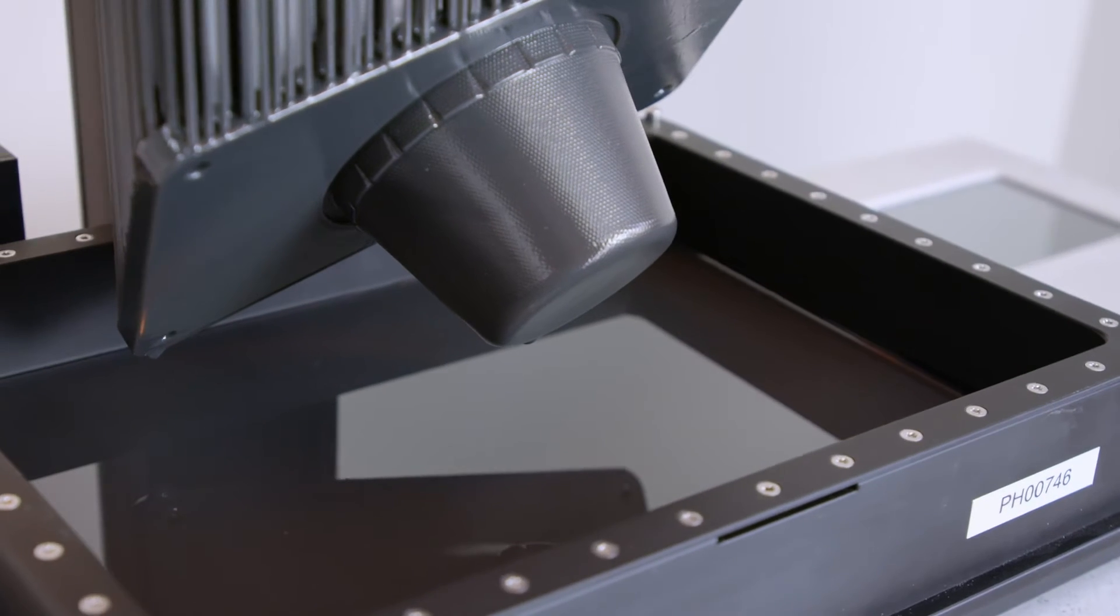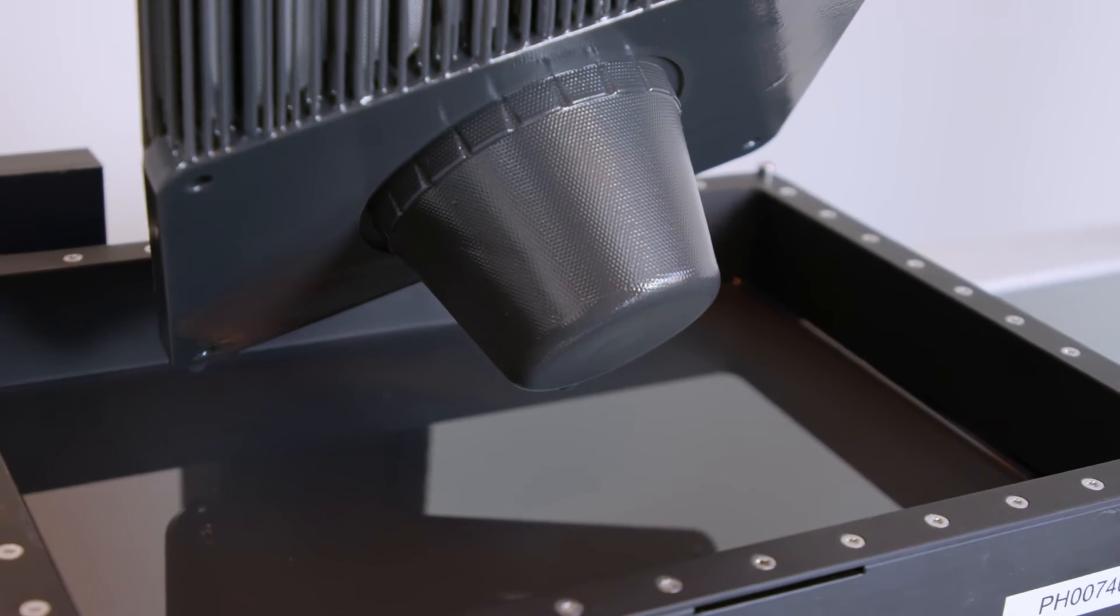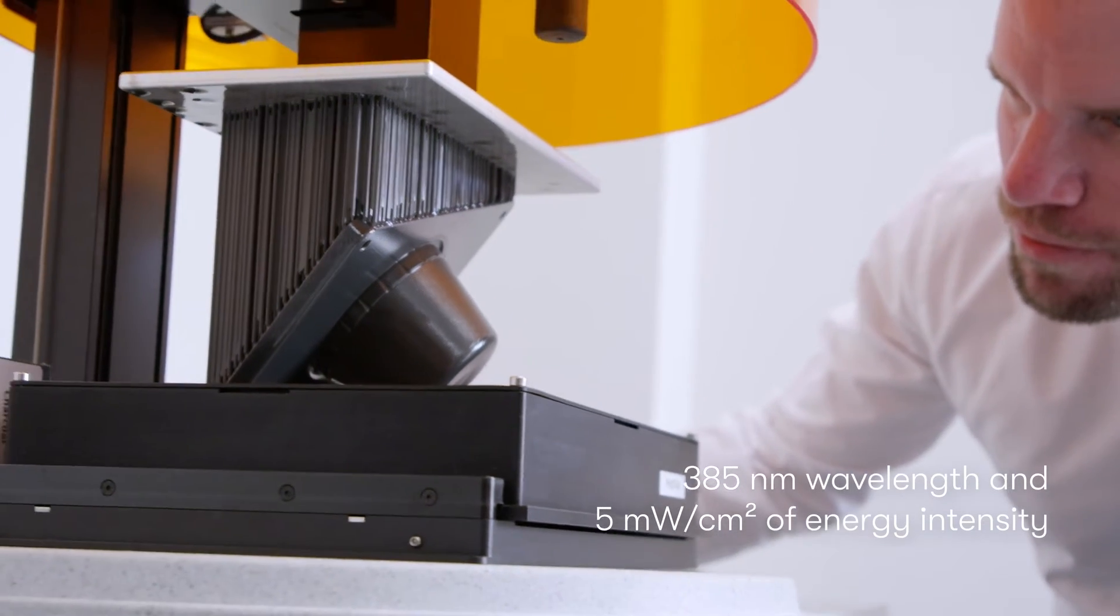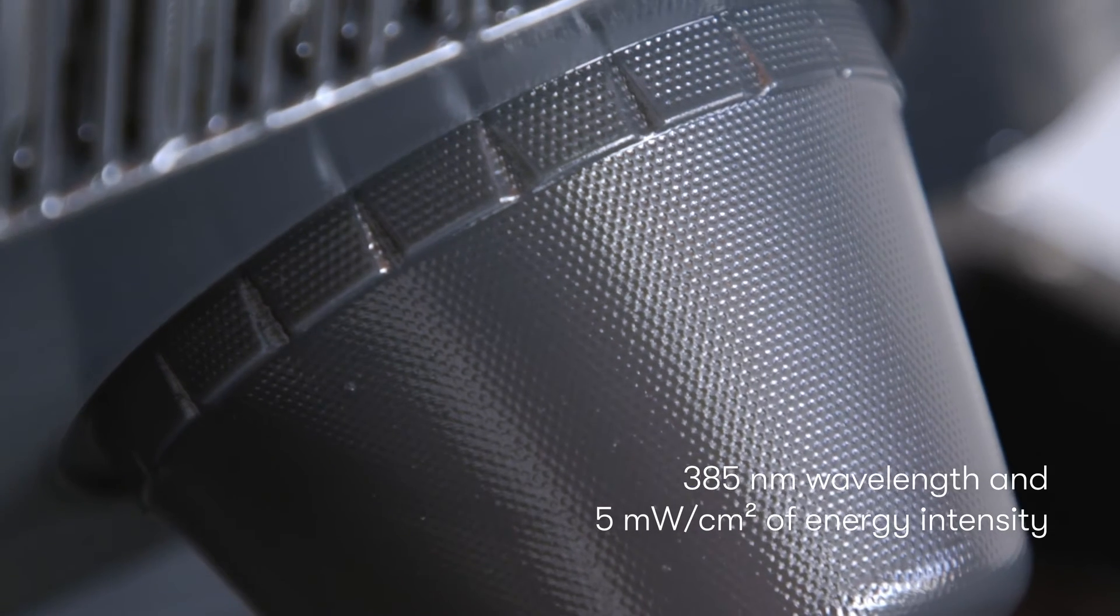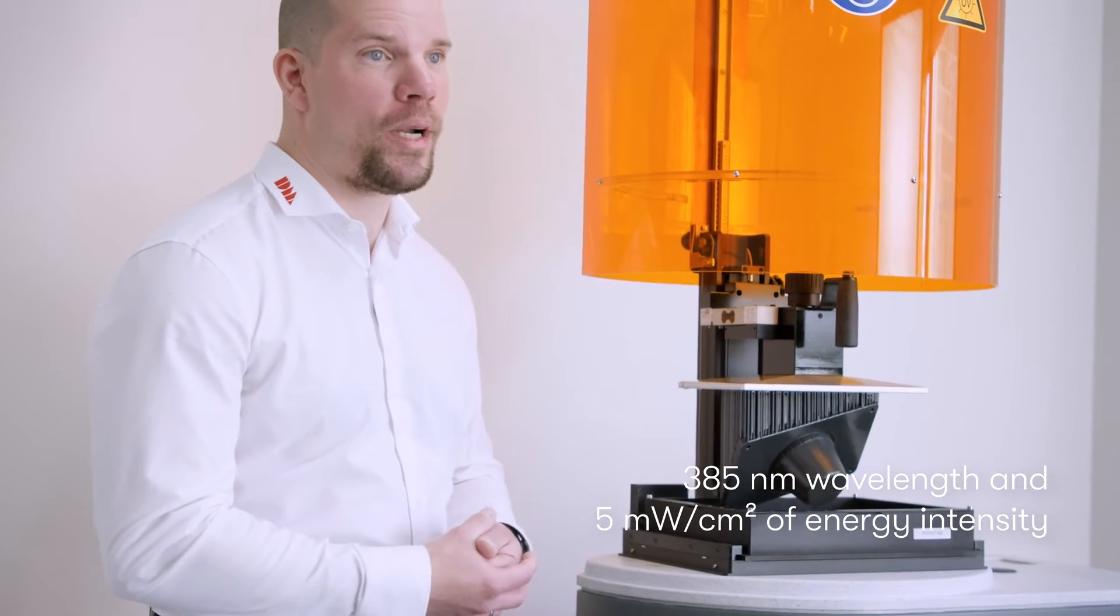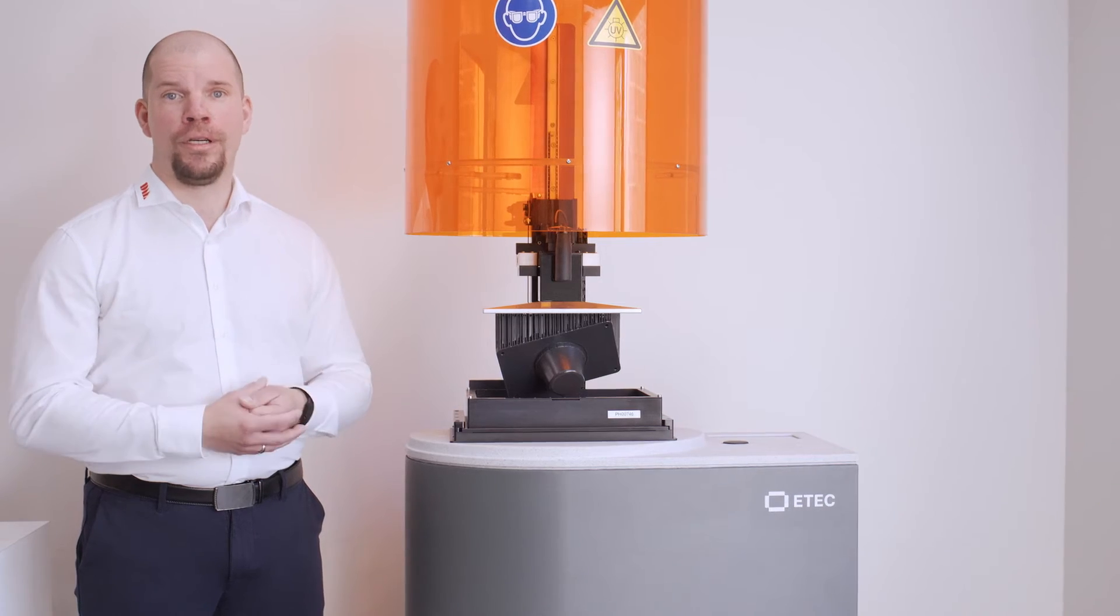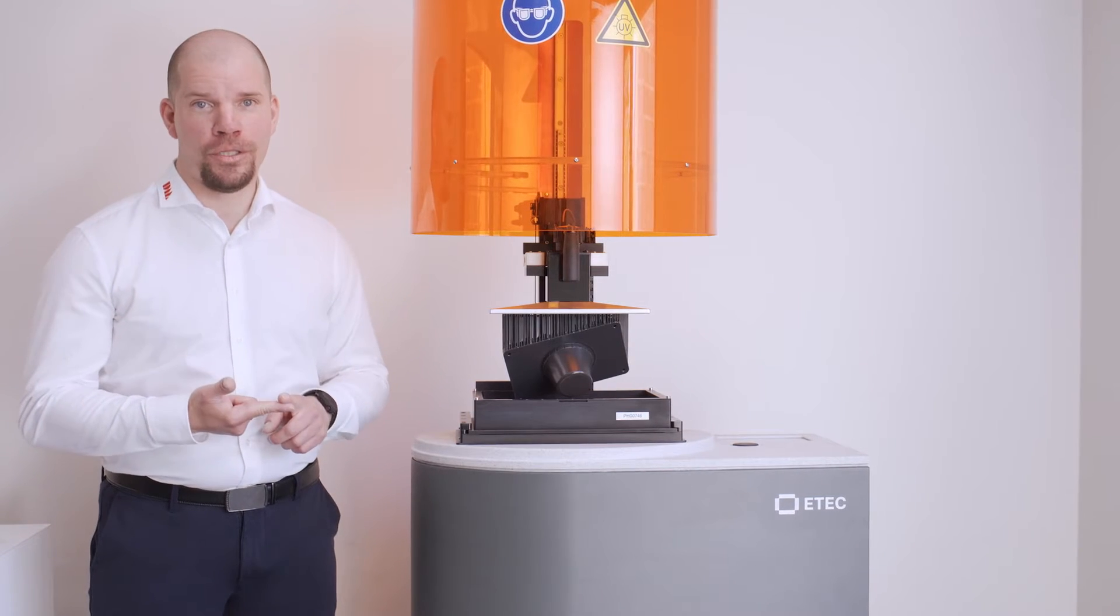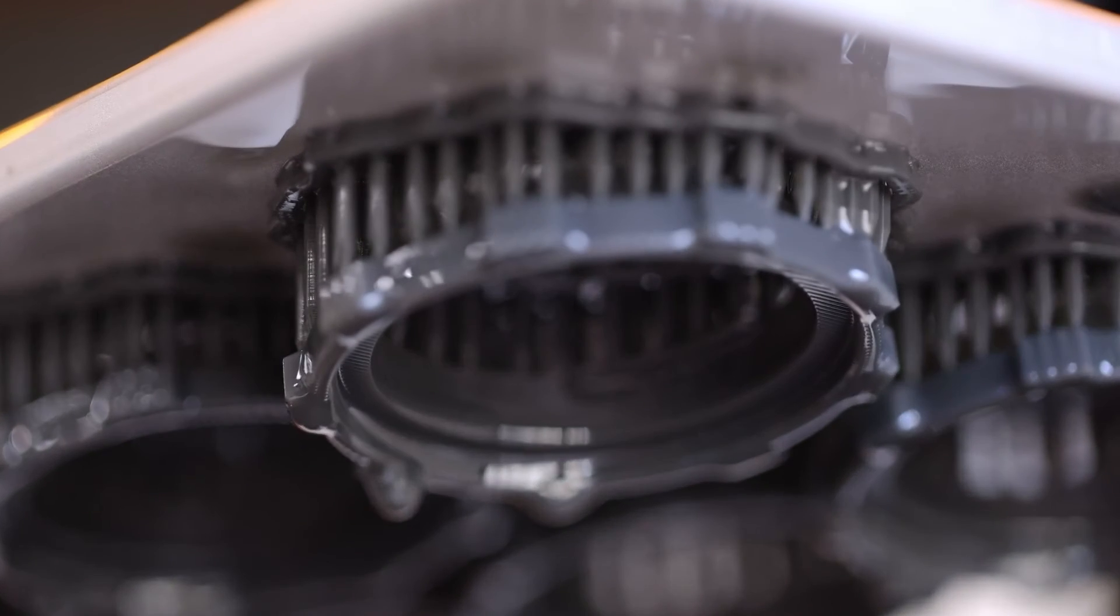Importantly, the new ETEC Pro XL is a premium DLP system, which we define as having a 385nm wavelength and 5mW per square centimeter of power, important for faster, high-quality curing and outstanding surface finish.